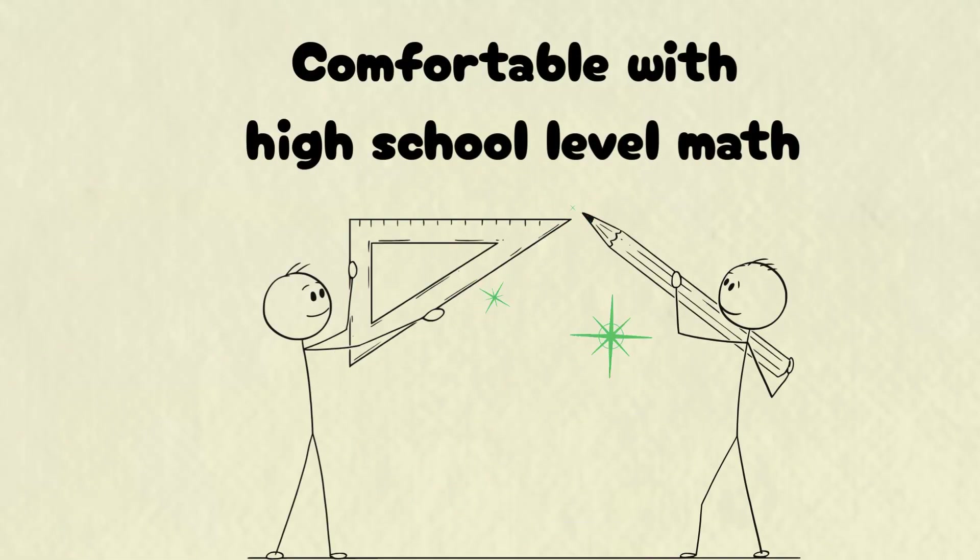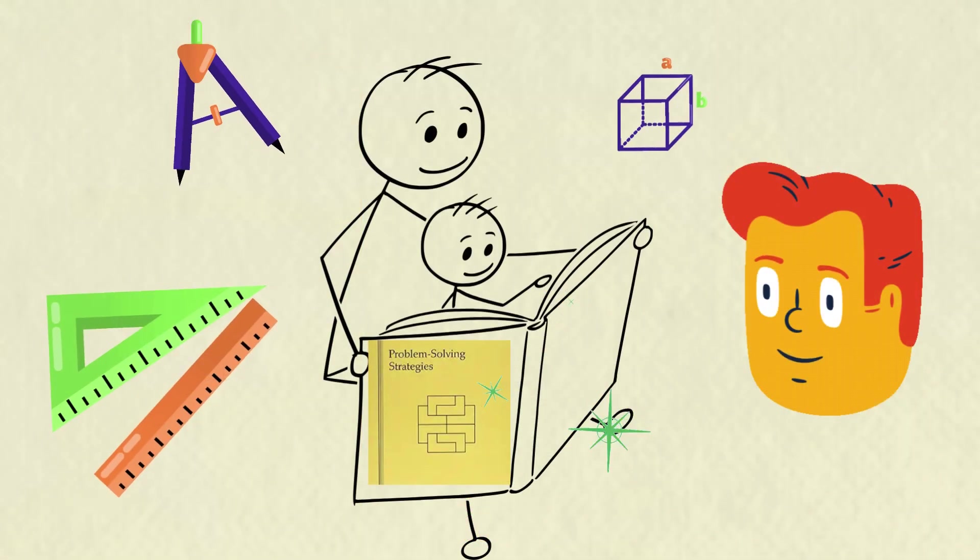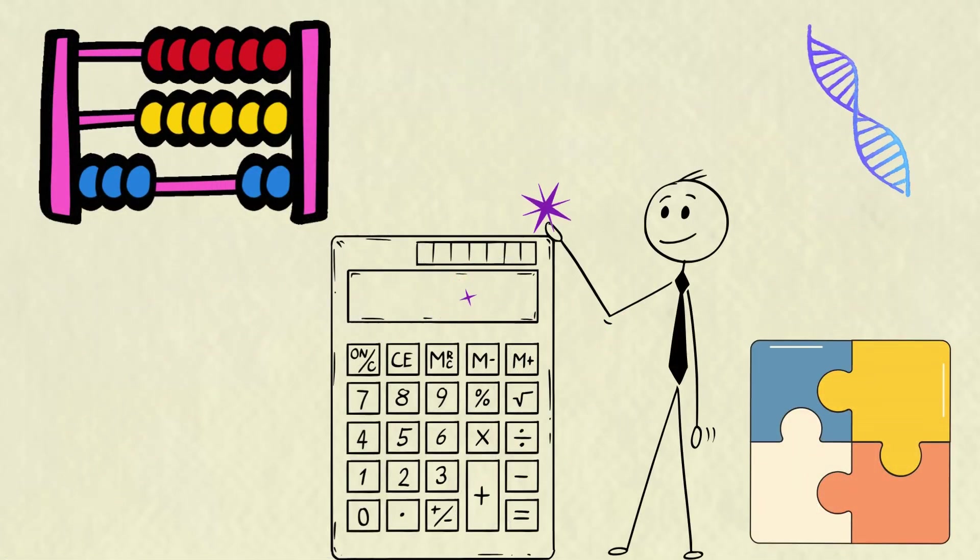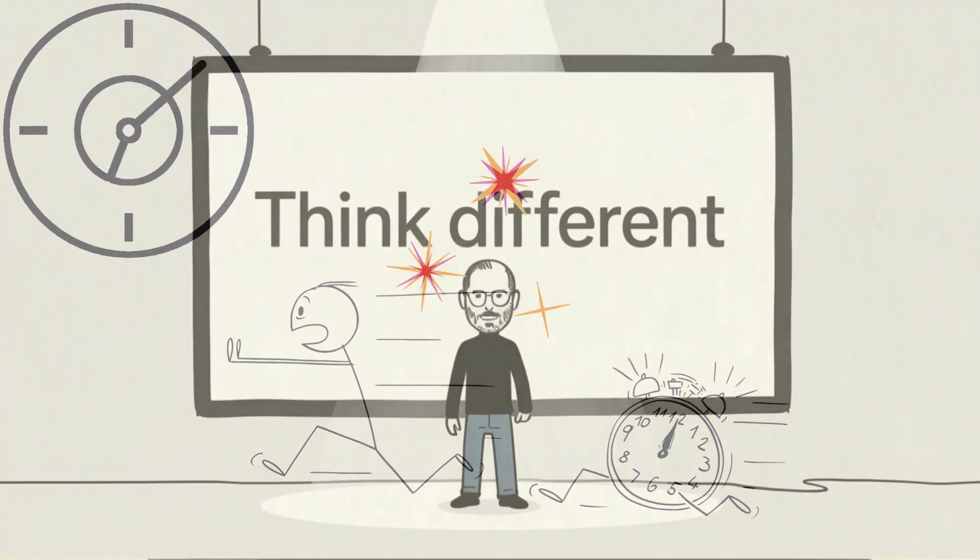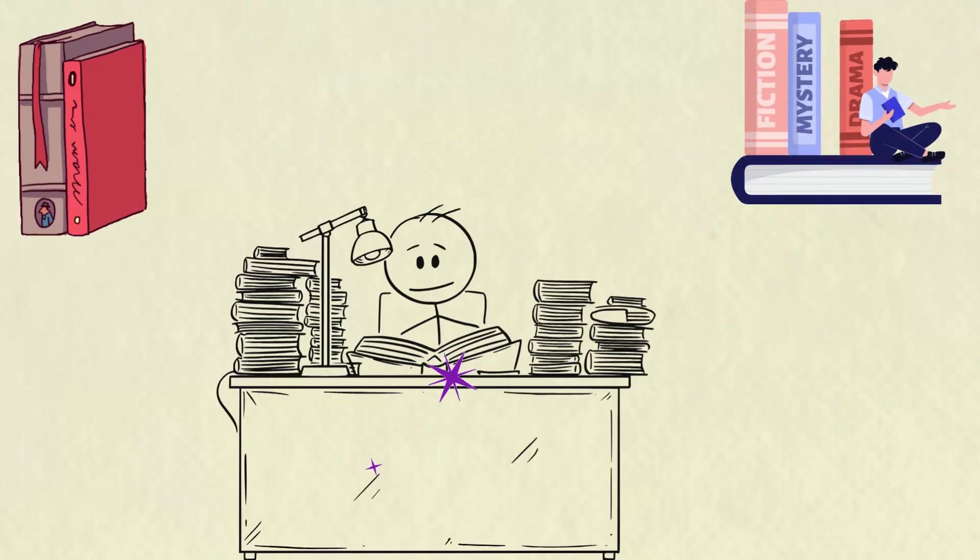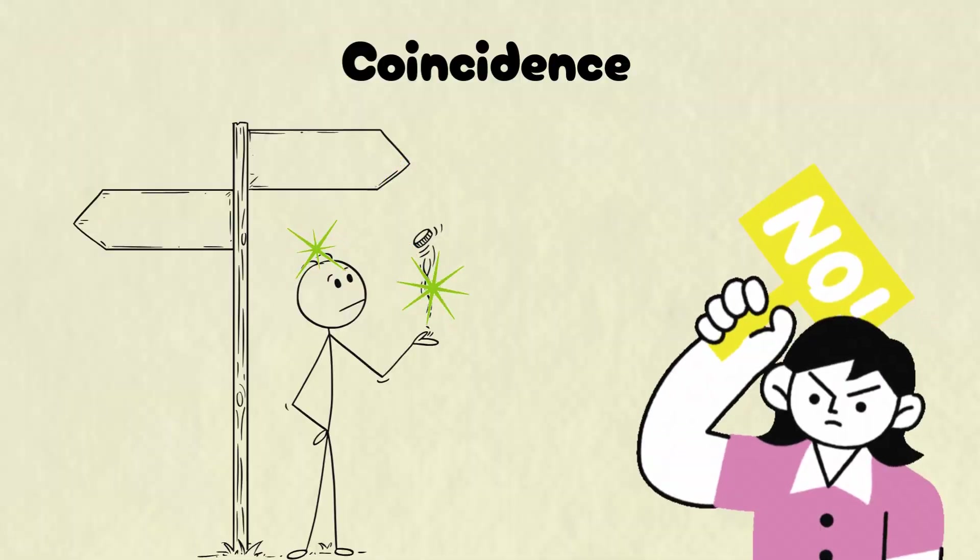Already comfortable with high school-level math? Then check out Problem Solving Strategies by Arthur Engel. This book is packed with problems pulled from national and international math contests, and it doesn't just give you problems. It teaches you how to think about solving them. I know someone who worked through every problem in that book and later won four gold medals at the International Math Olympiad. Coincidence? Probably not.